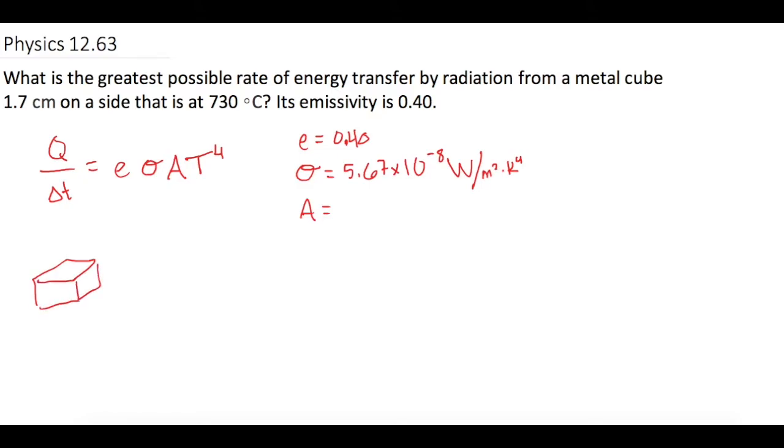So if we unwrap this cube, we get something that looks like this. So each one of these is the side of the cube, so it has 6 sides. And they tell us one of the sides is 1.7 centimeters.